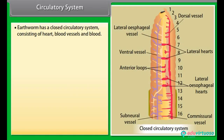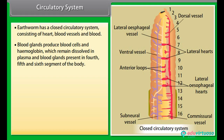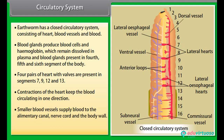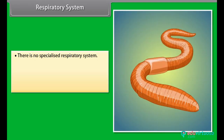Earthworm has a closed circulatory system consisting of heart, blood vessels and blood. Blood glands produce blood cells and hemoglobin, which remains dissolved in plasma. Blood glands are present in the fourth, fifth and sixth segments. Four pairs of hearts with valves are present in segments 7, 9, 12 and 13. Contractions of the heart keep the blood circulating in one direction. Smaller blood vessels supply blood to the alimentary canal, nerve cord and the body wall. Blood cells are phagocytic in nature.